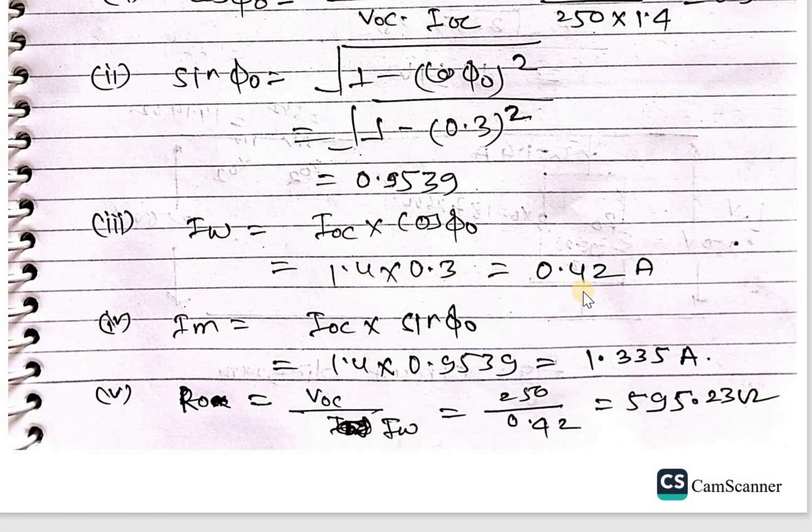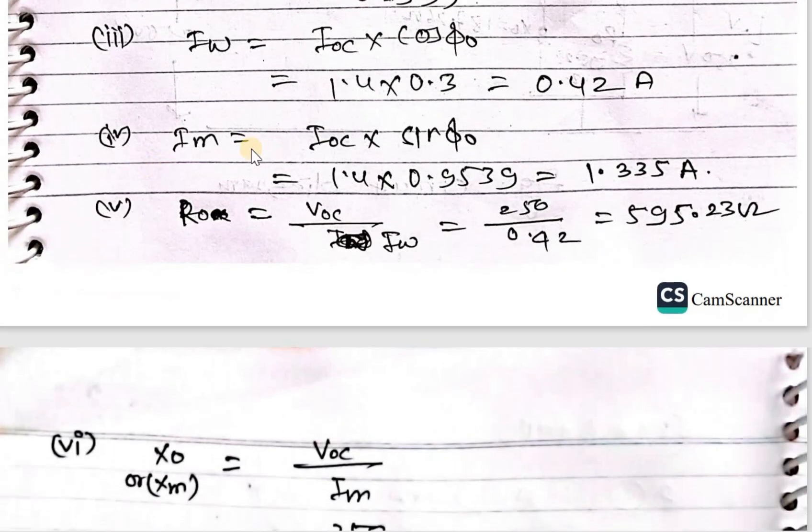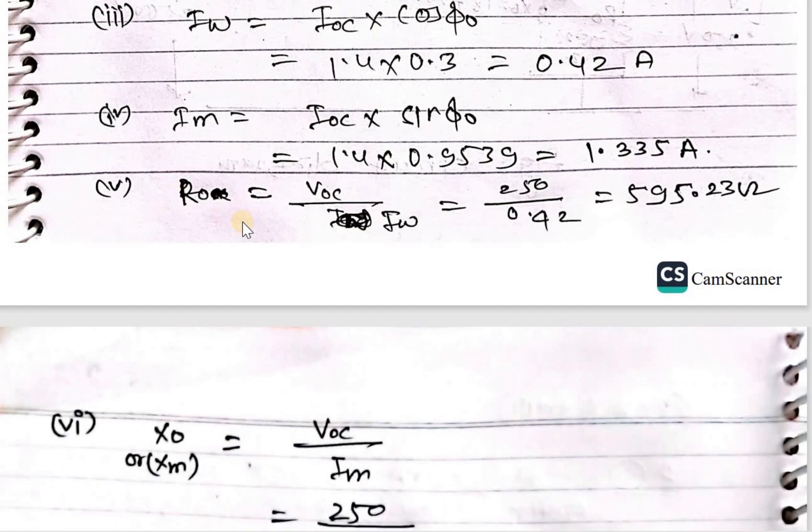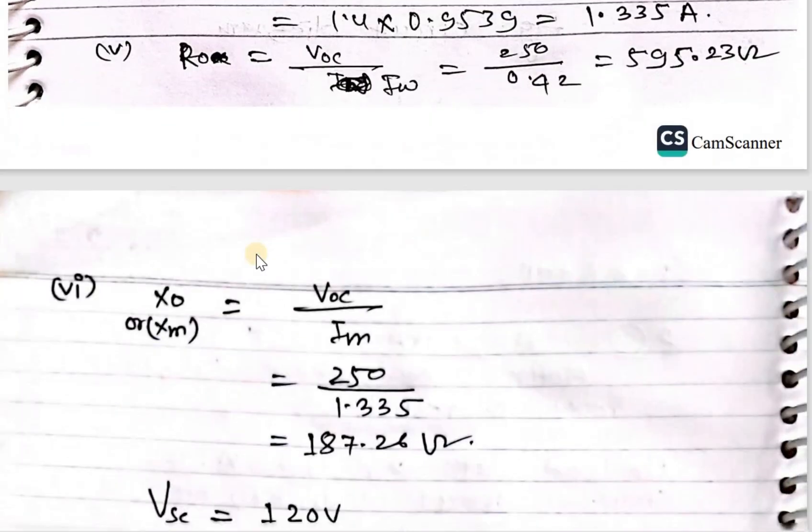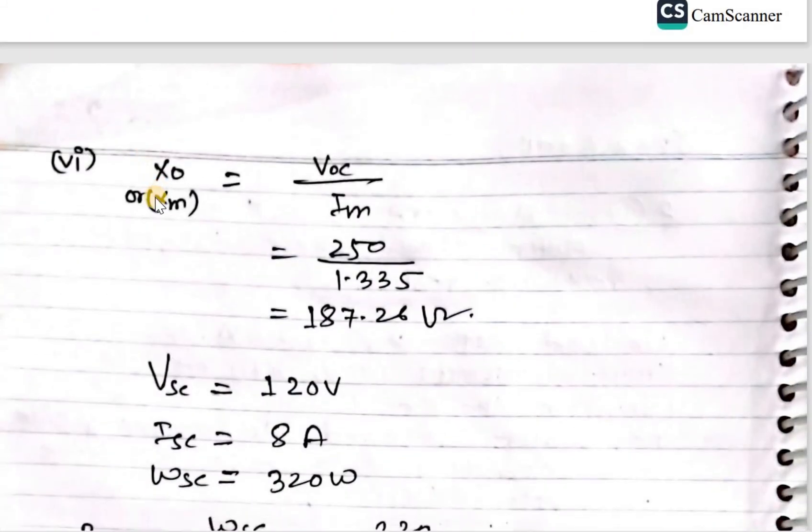Im equals 1.335 ampere. R0 equals Voc upon Iw, that is 250 upon 0.42, 595.23 ohm. And X0, or we can say Xm, equals Voc upon Im, 250 upon 1.335, that is 187.26 ohm.